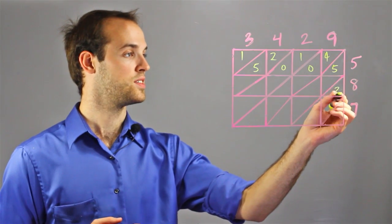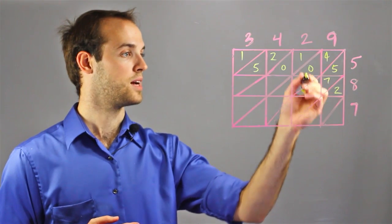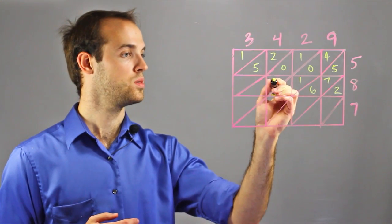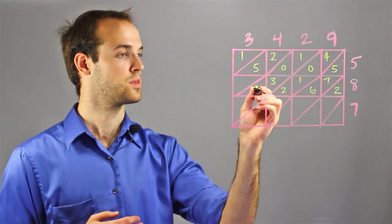8 times 9 is 72, 8 times 2 is 16, 8 times 4 is 32, 8 times 3 is 24.